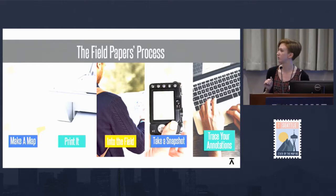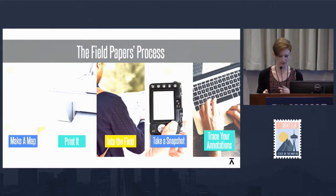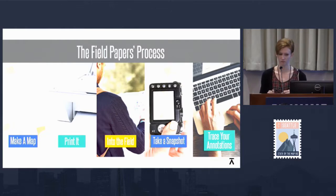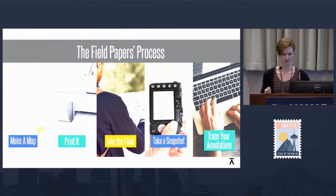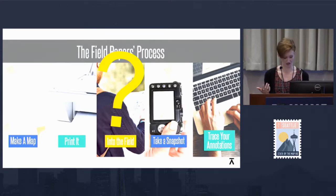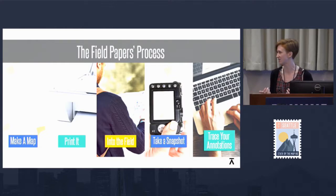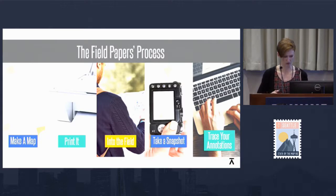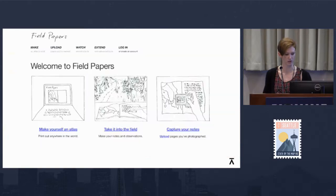All right — you've stuck around this long, let's talk about Field Papers. Field Papers is a tool that was built by Stamen Group that allows you to select an area on a map, print it out onto paper, take it out into the field, mark all over it, take a picture of that paper, load it back up, and edit your annotations. And if that sounds super vague, it's because it is. I would argue that the fact that it's vague is actually a good thing. It's simple, it's easy, and it's open-ended. There's not a whole lot to say about it, and that's really the beauty of the project.